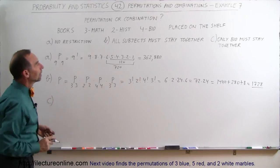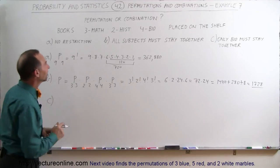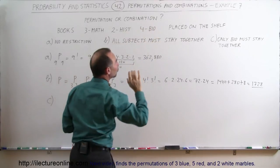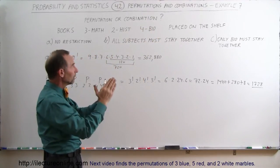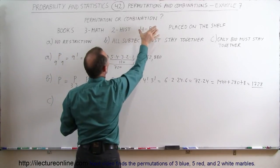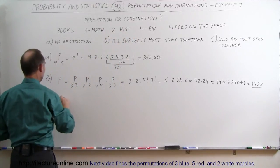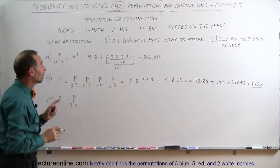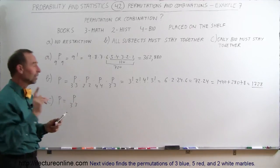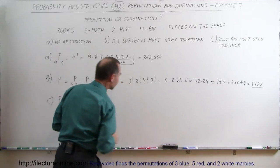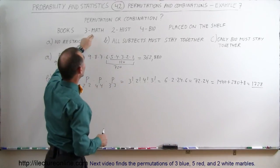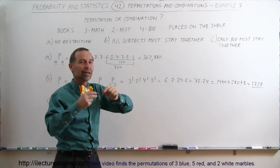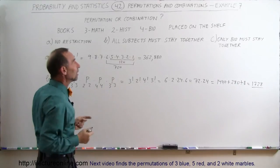Finally, for Part C, only the biology books must stay together. We have three math books, two history books, and four biology books. If the biology books stay together, we treat them as one single book. The three math books and two history books can be arranged any which way we want — so it's effectively five individual books plus one biology block, giving a total of six books that can be arranged in any order.